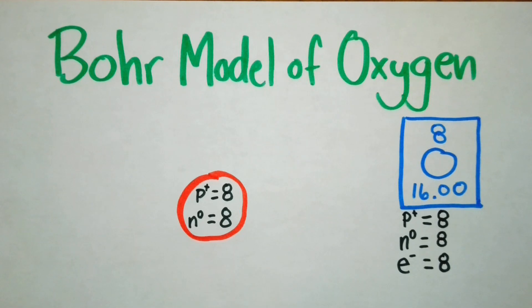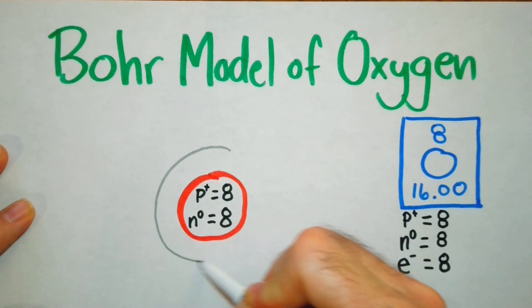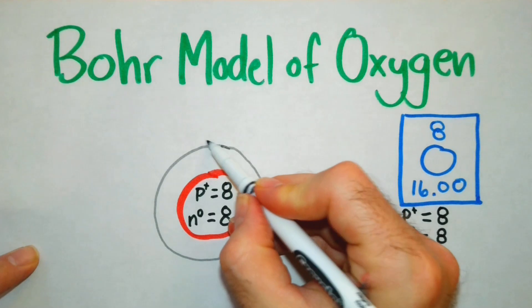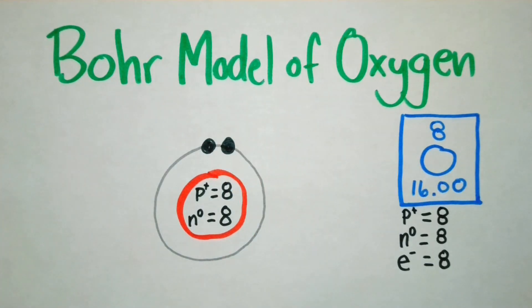Electrons orbit the nucleus in shells, also called orbitals. So we're going to draw our innermost electron orbital first, and we need a total of 8 electrons. The first orbital can only hold two, so we're going to put both of those right there. And that second electron pairs in that first orbital.